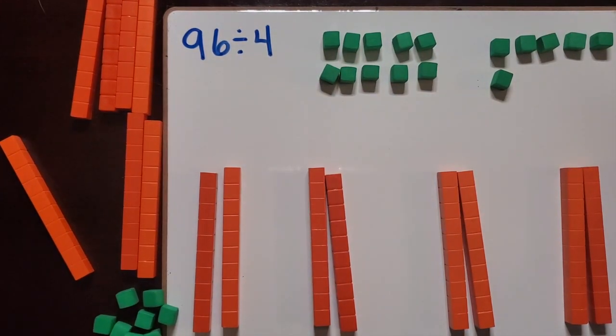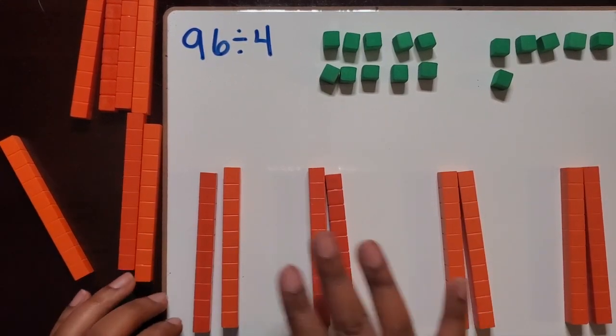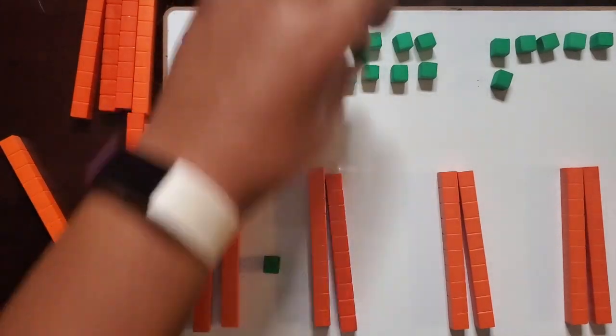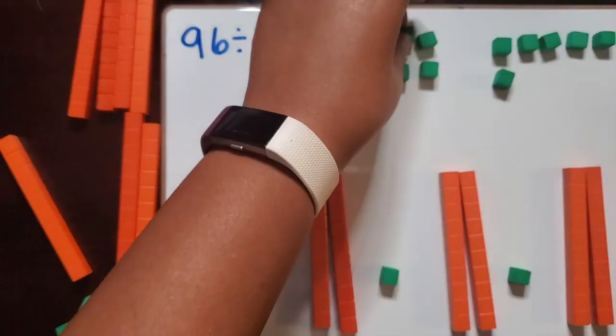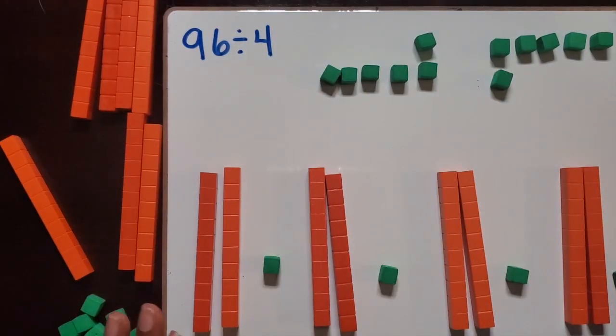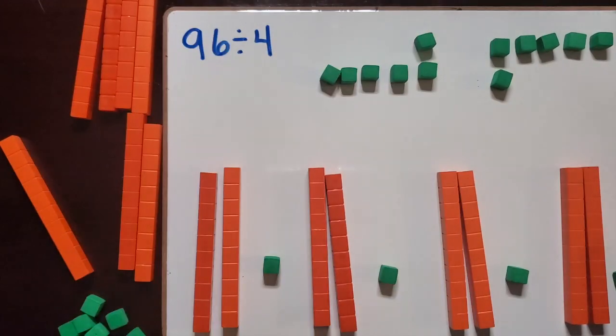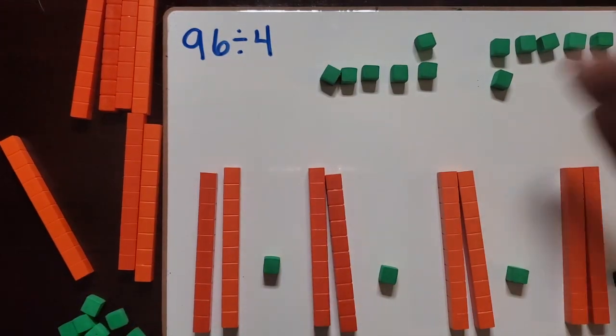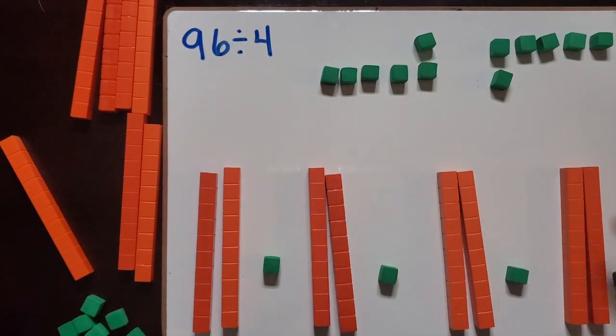Now do we have enough ones to go into those groups equally? So again, we have our four groups. We're going to take one of the unit cubes. There's enough to go in each group. And we're going to keep repeating that until we're out of ones or there's not enough for each of the groups to get one.